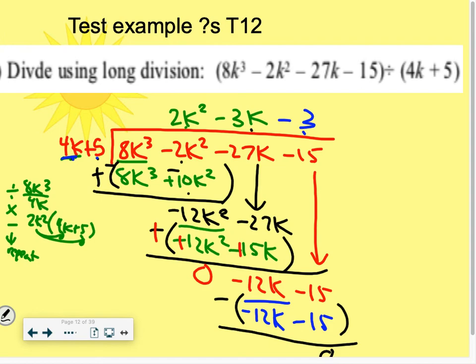So what this tells me is that 4k plus 5 is a factor because this is my answer with no remainder. Now this particular one, the divisor is not in x plus a number or x minus a number form.